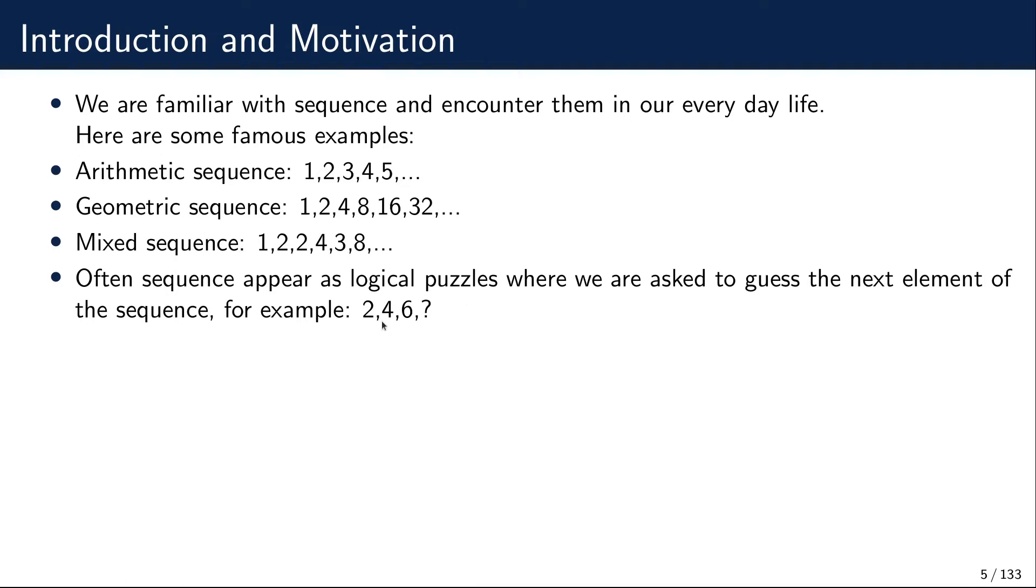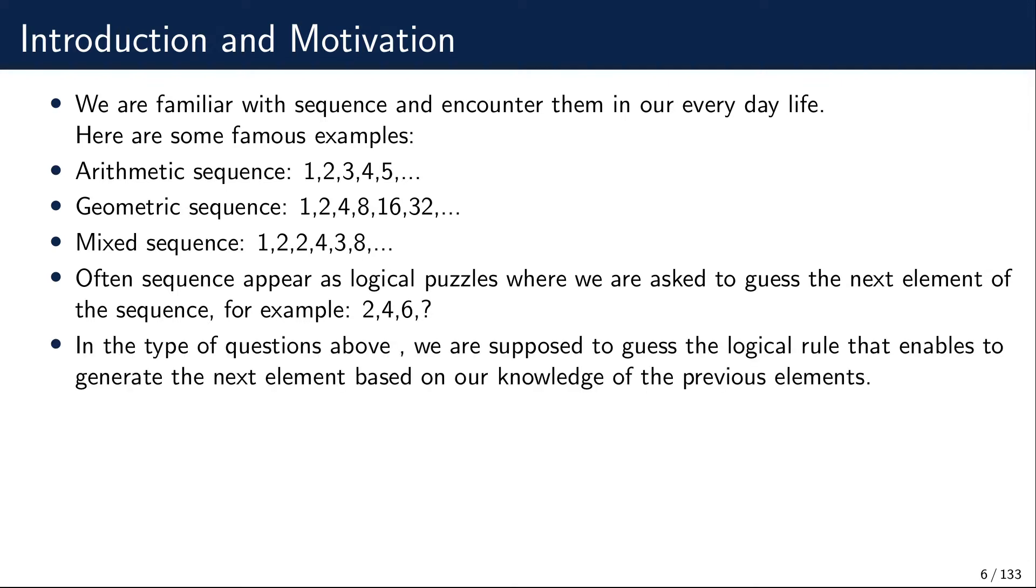For this particular sequence we see that we constantly add two, so this is an arithmetic sequence and our most natural guess would be that the next element should be eight. But as we will see, specifying an infinite sequence by only finitely many elements is impossible, so this sequence is not well-defined in general. Each such specification when we have finitely many elements, there are infinitely many ways to complete this sequence. But still we think there is some rule for generating the next elements from the previous ones, which will lead us to the definition.